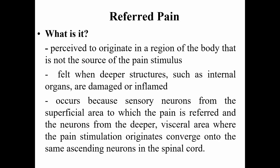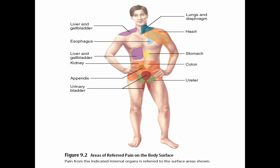Referred pain is a type of pain in which internal organs are damaged or inflamed. It occurs because there are no pain receptors on internal organs, so pain tends to radiate out from the deeper visceral area to where there are pain receptors. A good example is a heart attack — the pain will radiate to the shoulder and left arm. That is why one sign of a heart attack is radiating pain from the left side of the body.